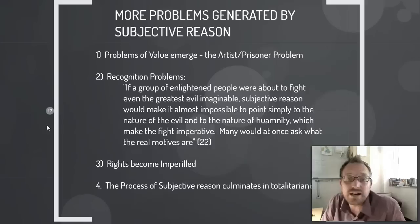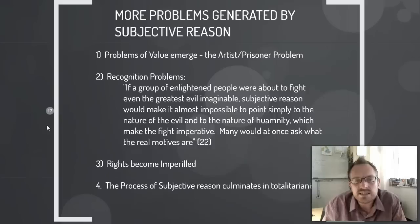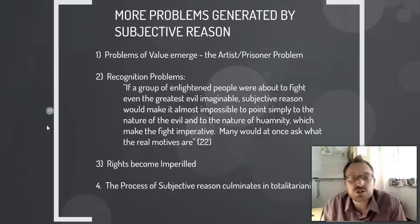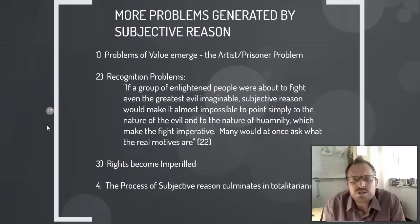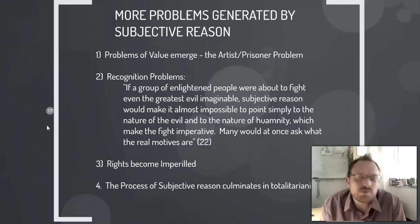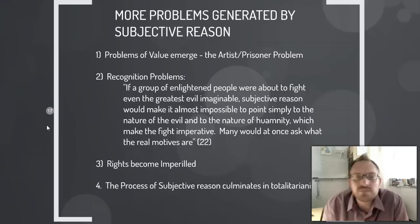What are some of the other problems generated by subjective reasoning? The problem of values emerges. For instance, how do we value things is no longer easy using subjective reasoning. What makes an artist better than a murderer in prison making license plates? The artist may make paintings, but if no one's ever going to buy those paintings, they're not contributing to the economic system — to the social self-interest system. Which means that to be a murderer in prison making license plates is more productive economically and thus should be considered more valuable. Obviously no one wants to say that. But the question is: how can we argue in favor of the value of the artist if all we have is subjective reason?